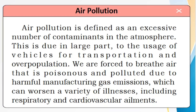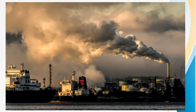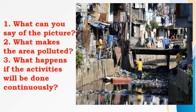Next, another activity that disrupts the cycle in our environment is what we call air pollution. Please read. This picture tells us that air is polluted because of the dirt or the chemicals coming out from factories and other factors.